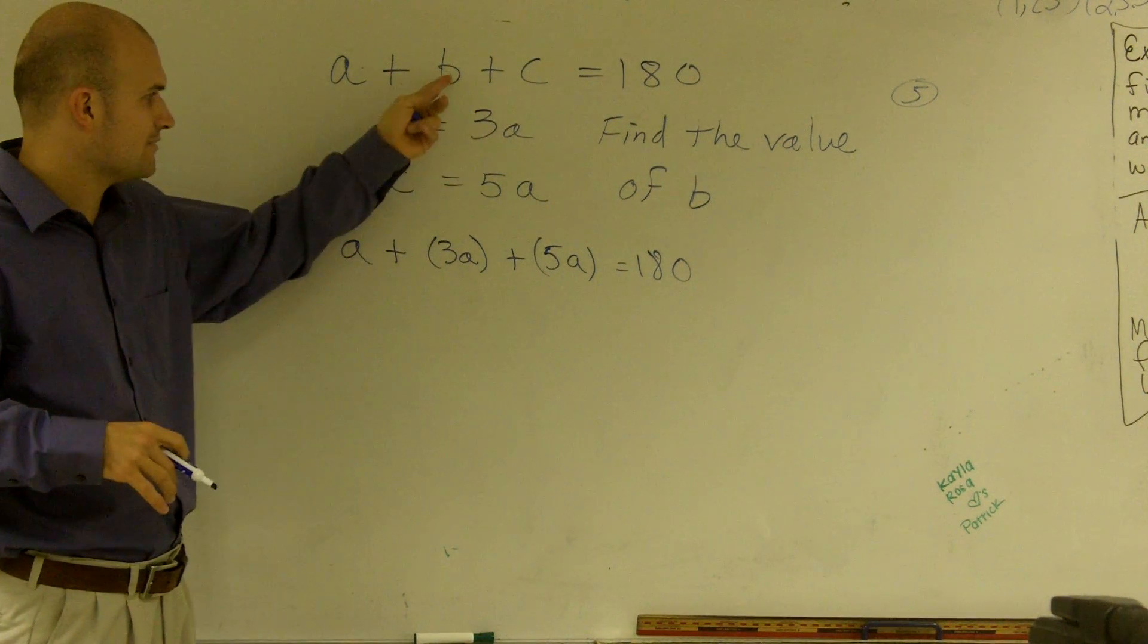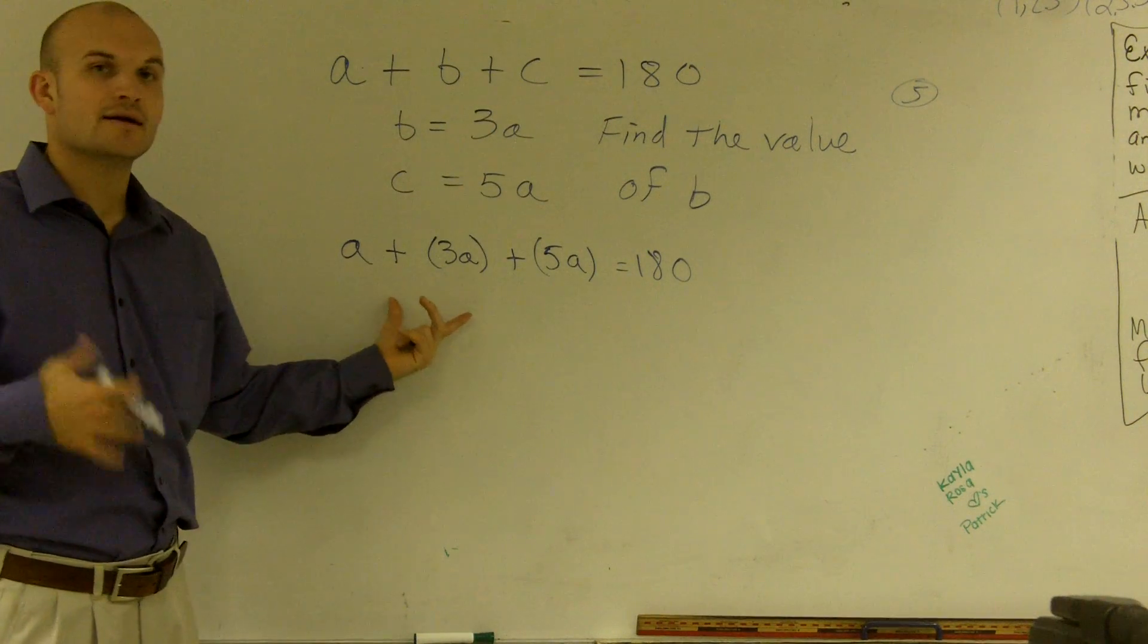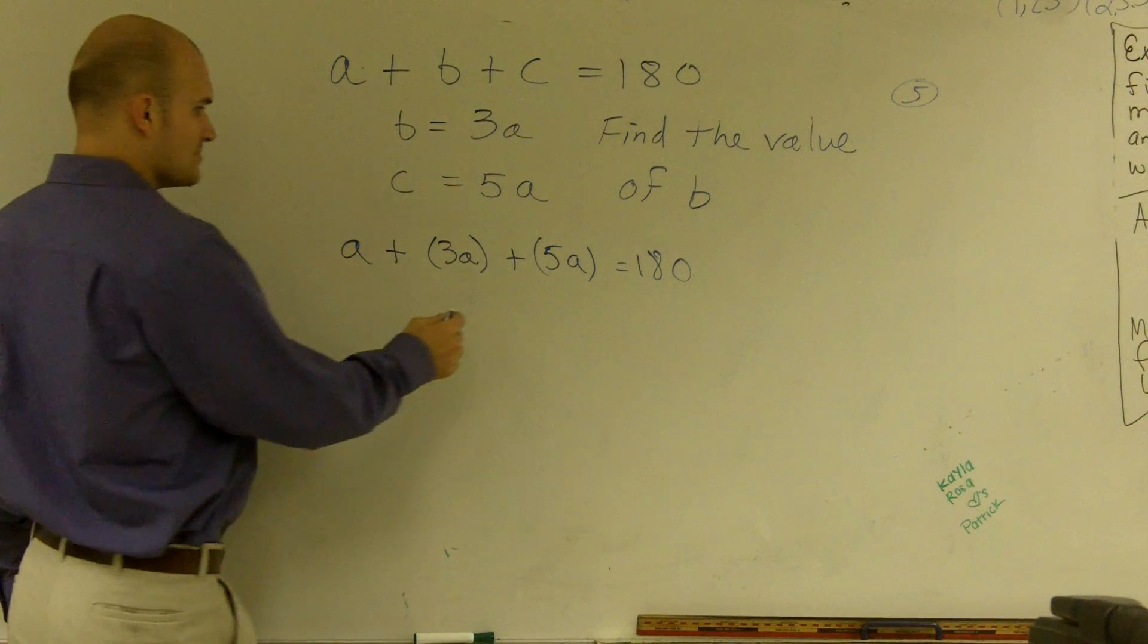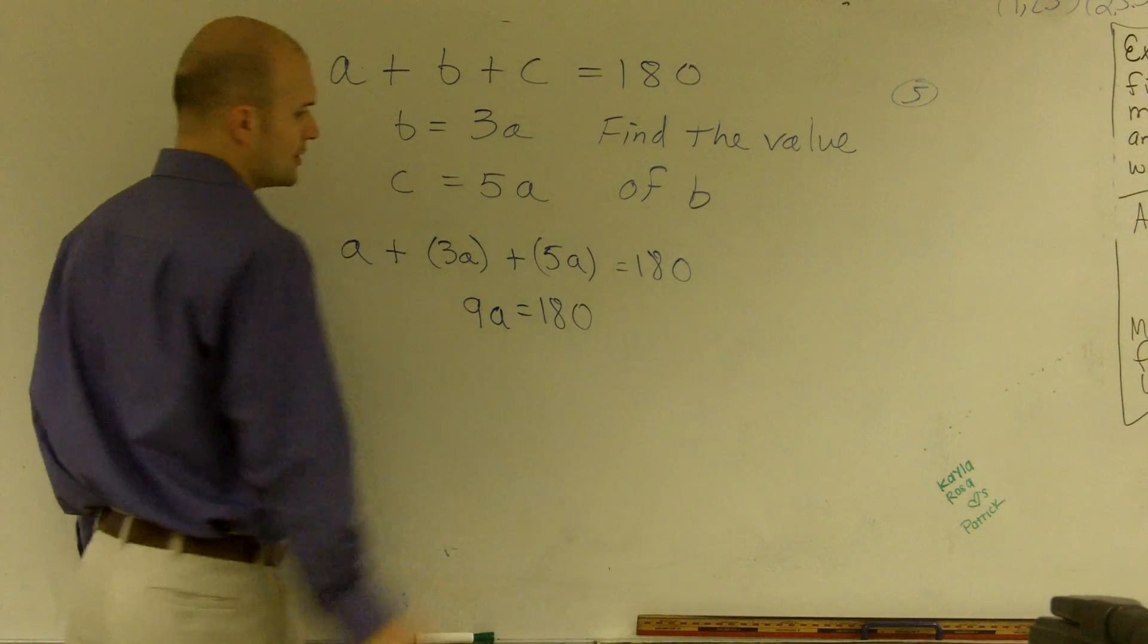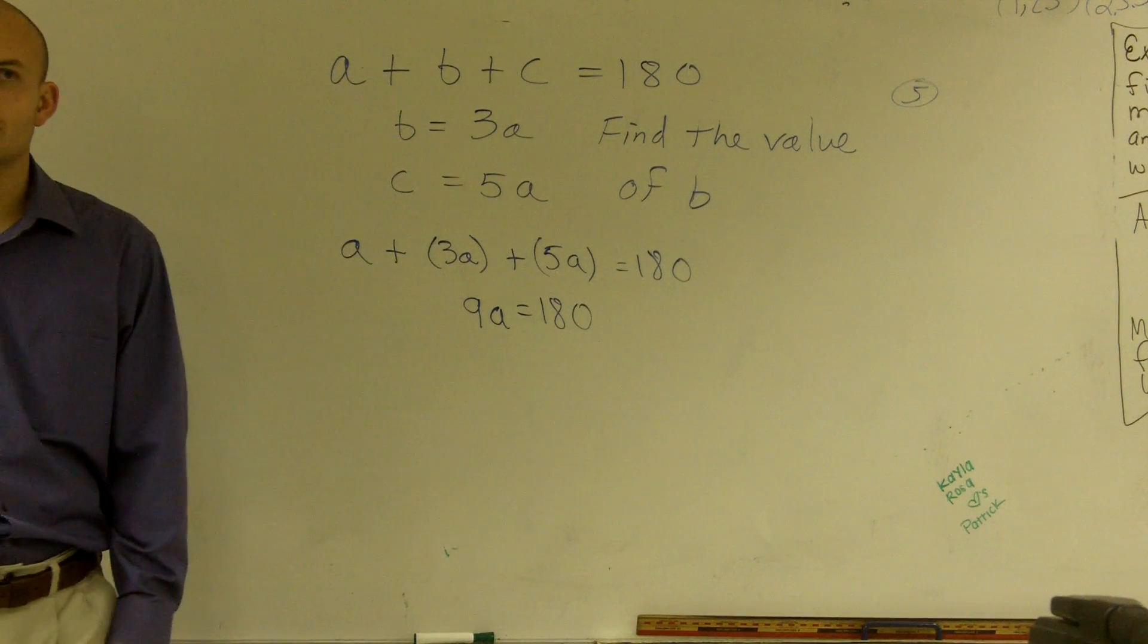if I plug in 3a in for b and 5a in for c, now what I can do is I can combine my like terms, which is going to give me 9a equals 180.